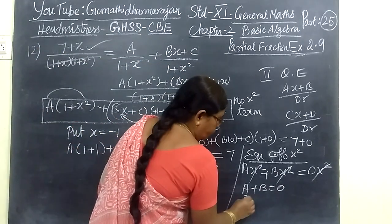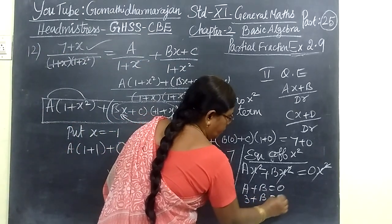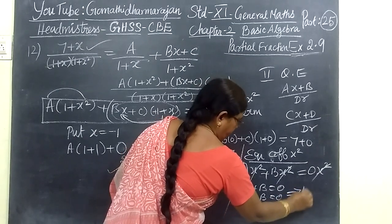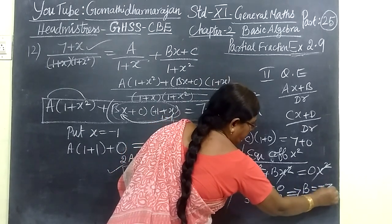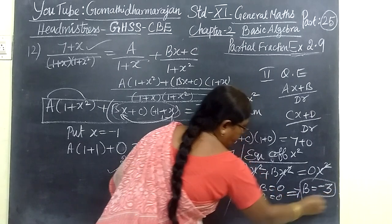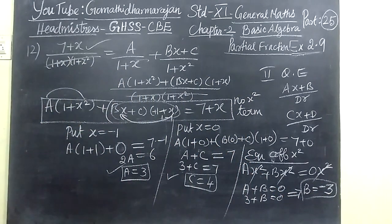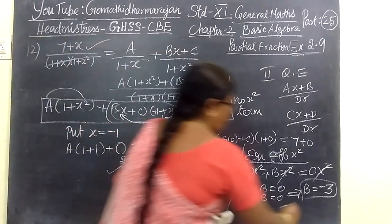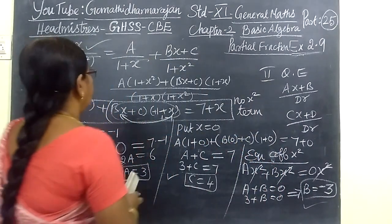So A plus B equal to 0. A equal to 3, so 3 plus B equal to 0, which implies B equal to minus 3. So for that also we check the answer. So B equal to minus 3, so that is the correct one. You will correct it.